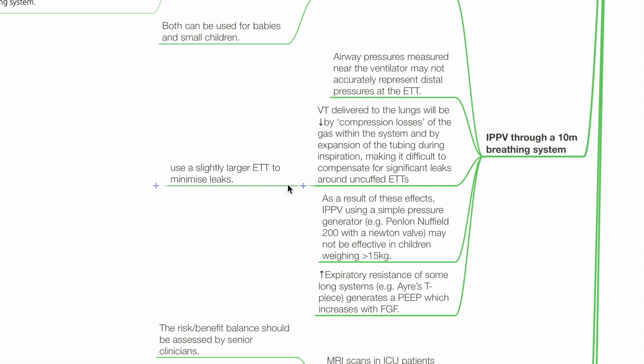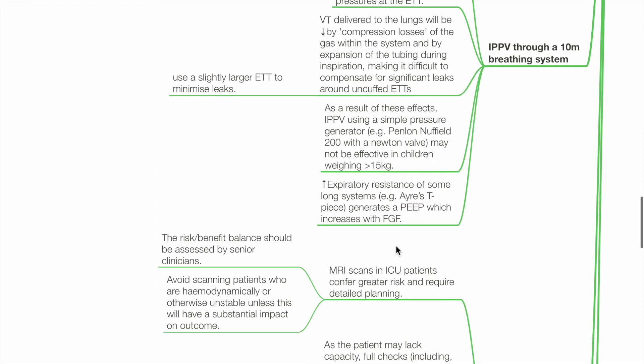As a result of these effects, IPPV using a simple pressure generator such as the Penlon Nuffield 200 with Newton valve may not be effective in children weighing more than 15 kg. Increased expiratory resistance of some long systems such as the Ayre's T-piece generates a PEEP which increases with fresh gas flow.